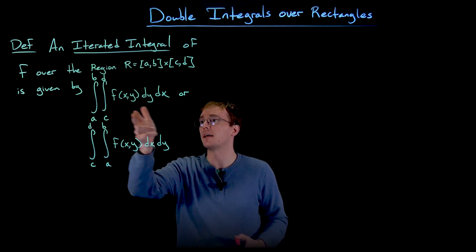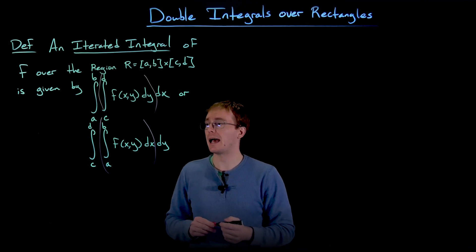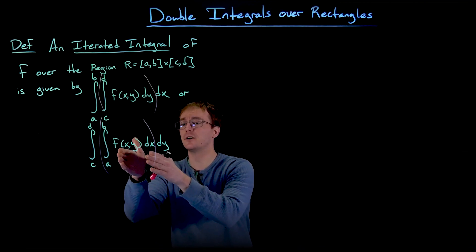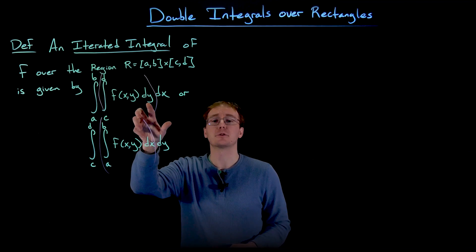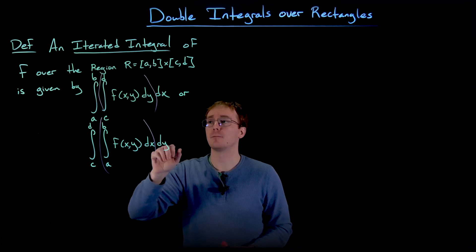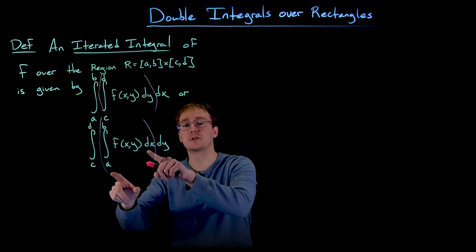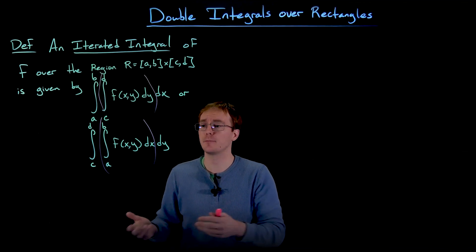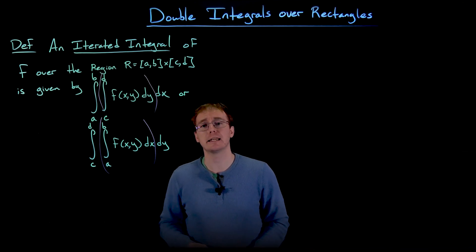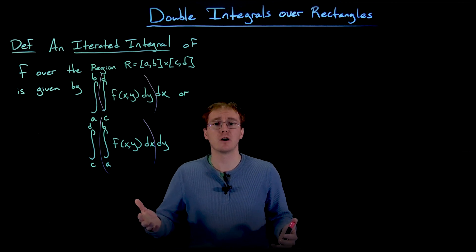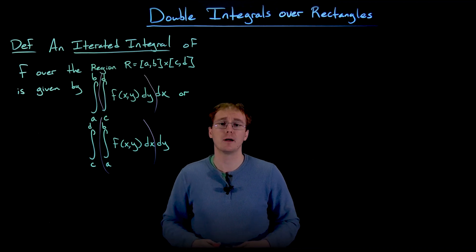We fix an x value and run through the inner integral with respect to y. We think of invisible parentheses around the inner and outer integrals. For the first iterated integral we integrate with respect to y first, then take that answer and integrate with respect to x. For the second iterated integral we integrate with respect to x first, then with respect to y. We treat one variable as a constant, just like in partial differentiation.